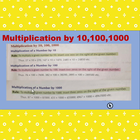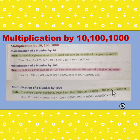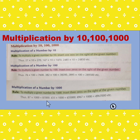For multiplication by 1000, insert three zeros on the right of the given number. For example, 87 multiplied by 1000 — we insert three zeros on the right side and get 87,000. This is the rule when we multiply by 10, 100, and 1000.